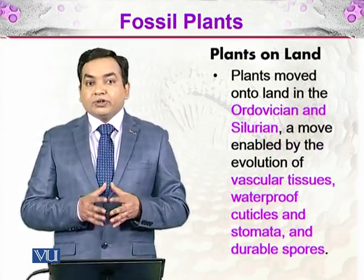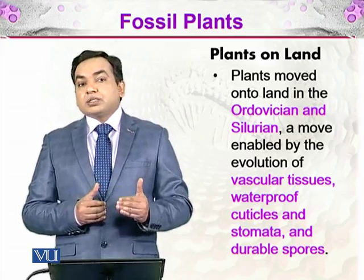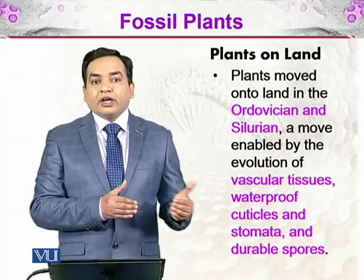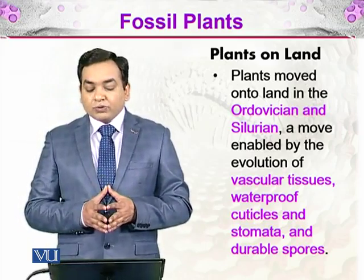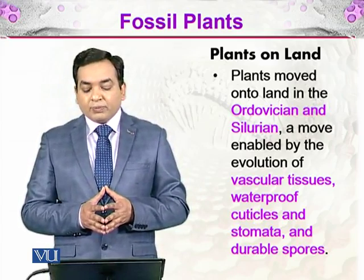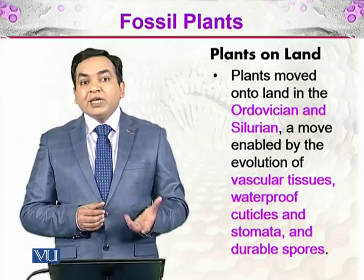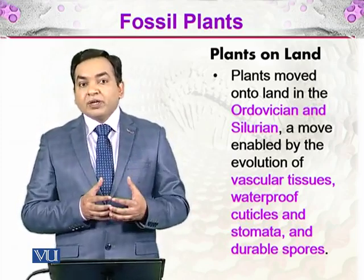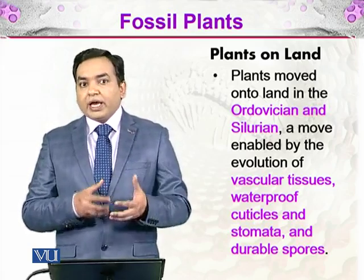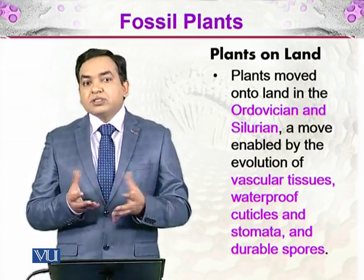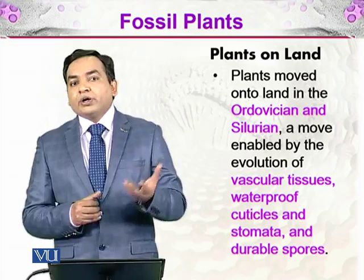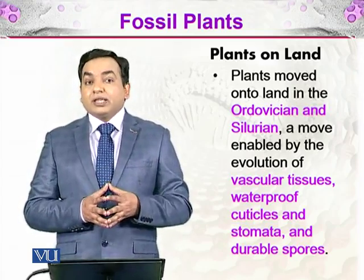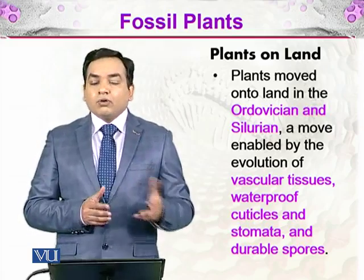Then there is the terrestrialization of plants — that means plants moved from an aquatic environment to a terrestrial environment, just like animals did. Plants moved onto land in the Ordovician and Silurian, a move enabled by the evolution of vascular tissue. The vascular tissues are xylem and phloem: xylem takes up water and minerals from the soil, food is made in the leaves through photosynthesis, and that food is transferred to non-photosynthesizing parts through the phloem. This reduced the plants' dependency on the aquatic environment.